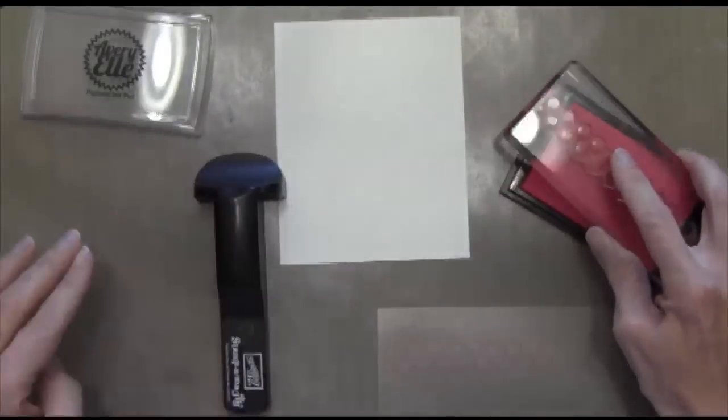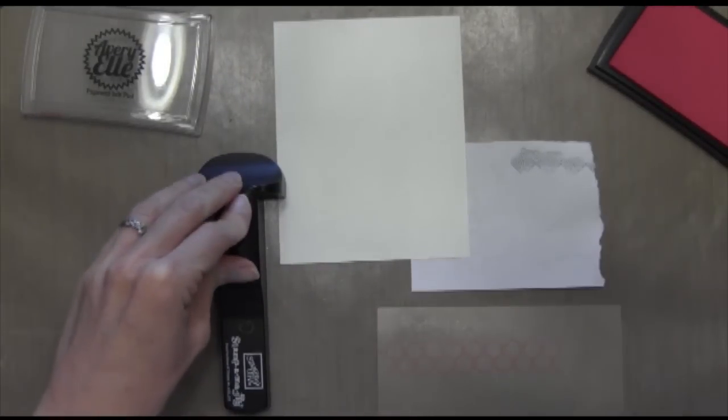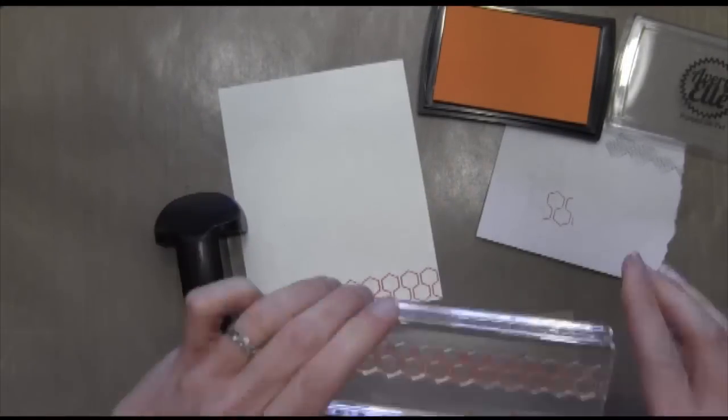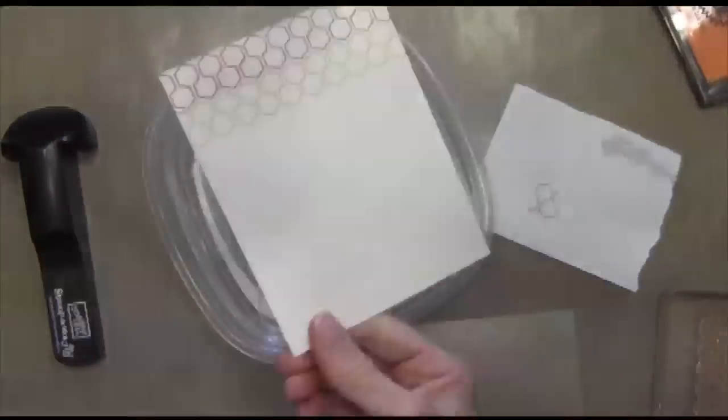First thing I'm going to do is raspberry and put a little scratch sheet underneath so I don't get my craft mat dirty. Then I'm going to clean my stamp off and use that same plastic sheet to line it up, and that's called Fizz.